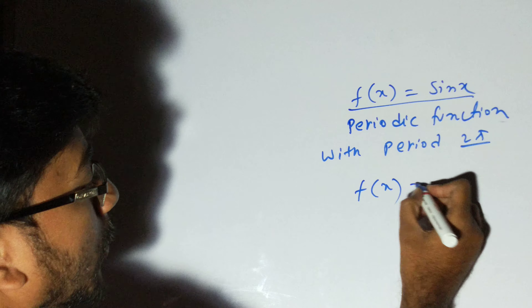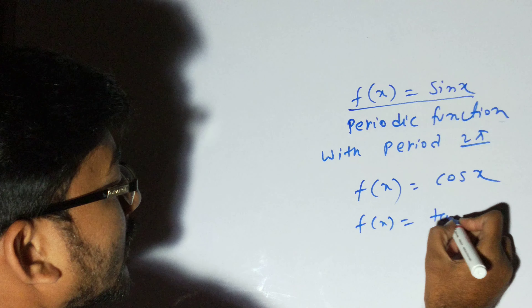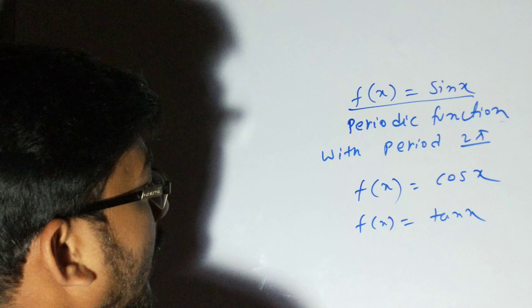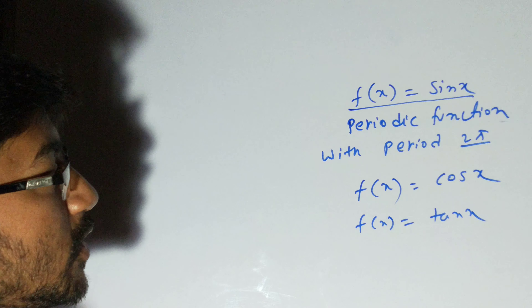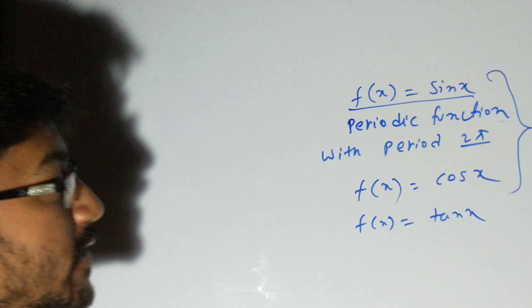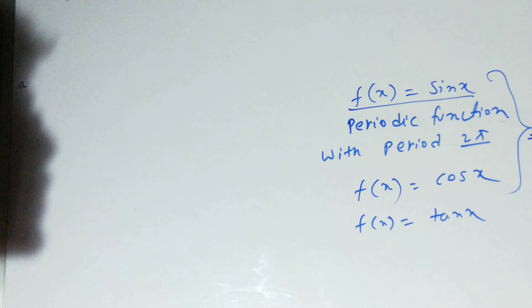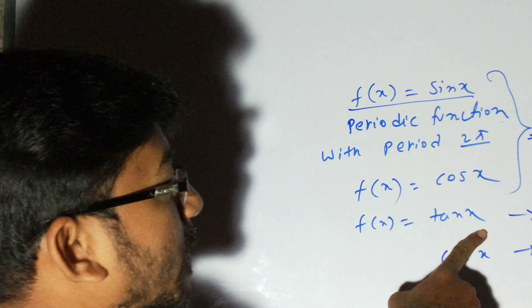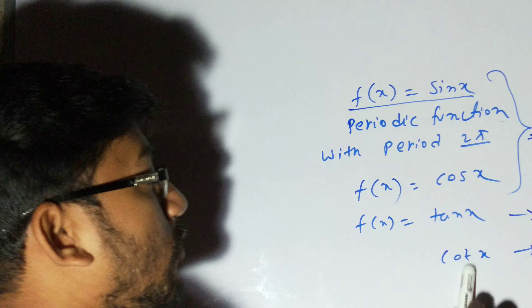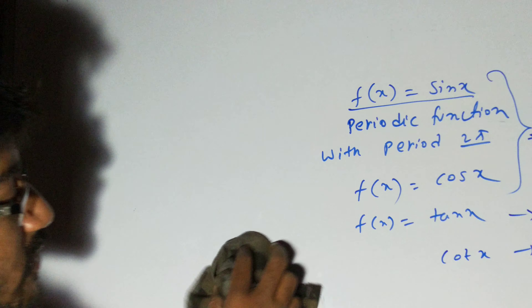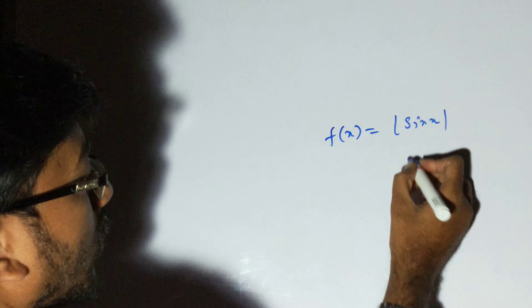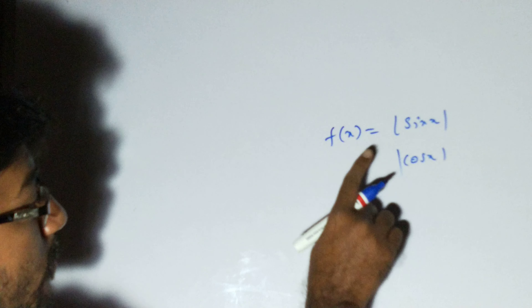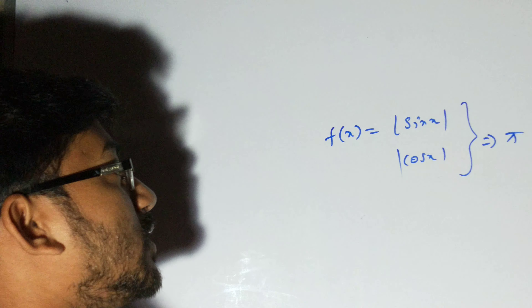Similarly, cos x, tan x, and cot x are all periodic functions. For simple harmonic motion, we mainly use sin and cosine, and both have period 2π. However, tan x and cot x have period π, since tan(x + π) = tan x and cot(x + π) = cot x. For trigonometric mod functions — |sin x|, |cos x|, |tan x|, |cot x| — all have period π. This is an important trick to keep in mind for simple harmonic motion.